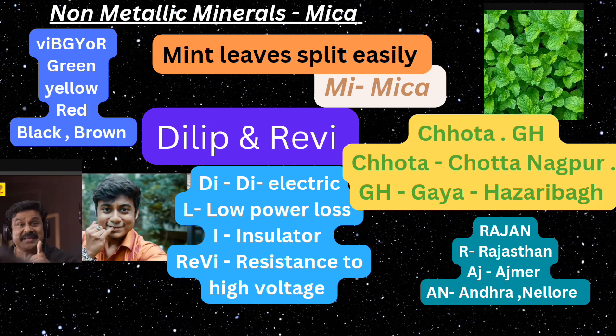The fourth mnemonic is 'Chota born in GH, his name is Rajan.' In Hindi, Chota means small — referring to Chota Nagpur. 'GH' stands for Gaya and Hazaribagh. These are the leading mica-producing regions. 'Rajan' encodes: R for Rajasthan, A for Ajmer, and N for Andhra (Nellore) — also major mica-producing regions.